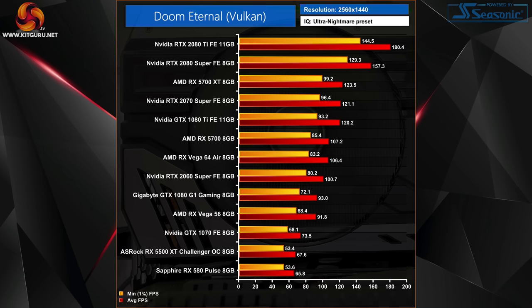At 1440p this becomes a stiffer test for some lower-end cards, but even the RX 580 and the 5500 XT 8GB still averaged over 60 frames per second and felt very smooth. High refresh rate gamers will be served well by pretty much anything from the Vega 56 and up, with both the 5700 XT and 2070 Super averaging around 120fps at this resolution. The 2080 Ti is still able to push 180 frames per second at 1440p.